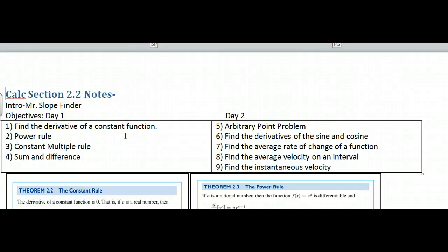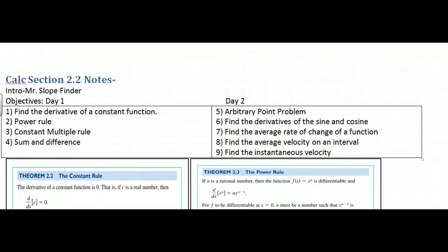Hi, this is calculus section 2.2 notes. This will be day two. We did day one already, and so this is day two. Arbitrary point problems we'll do in class, and then we want to find the derivative of sine and cosine, average rate of change, average velocity, and then the instantaneous velocity. So we're getting into more applications of the derivatives.